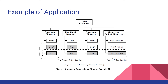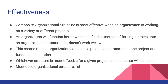A matrix structure would require new construction to occur within one of the maintenance departments, where the project manager would report to a functional manager rather than the executive. The composite organizational structure is most effective when an organization works on a variety of different projects, either simultaneously or sequentially. An organization will function better when it is flexible instead of forcing a project into an organizational structure that doesn't work well with it. This means that an organization could use a projectized structure on one project and a functional structure on a different project, using whichever organizational structure is most effective for a given project.